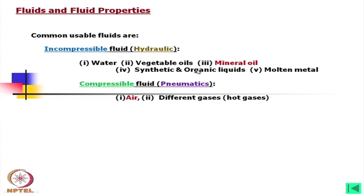Apart from that, particularly looking into the property that it should not be inflammable, synthetic and organic liquids are also being used. Lastly, molten metal can also be used as a fluid for fluid power transmission. This is a special application — very rare, but it can be used.